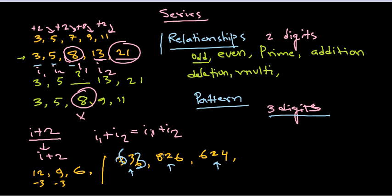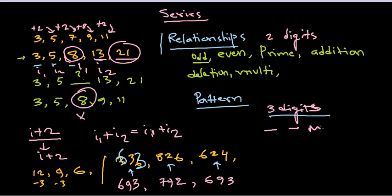Sometimes the relationship is addition instead of subtraction. For example: 693, 792, 693 — in all these cases, first digit + third digit = middle digit: 6 + 3 = 9, 7 + 2 = 9, 6 + 3 = 9. So either first digit minus third digit gives the middle digit, or first digit plus third digit gives the middle digit. There is no single fixed rule.